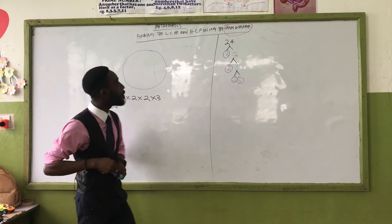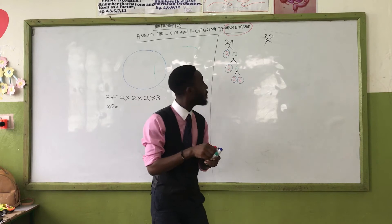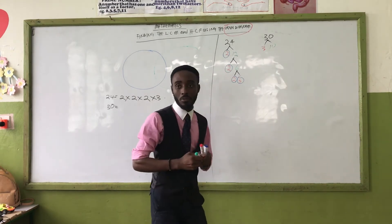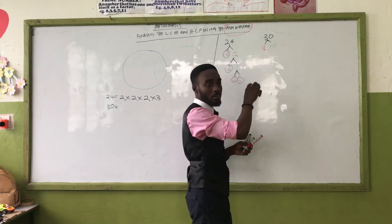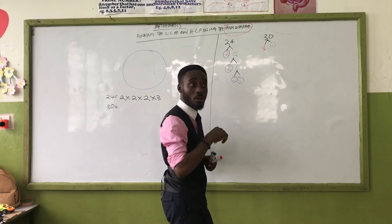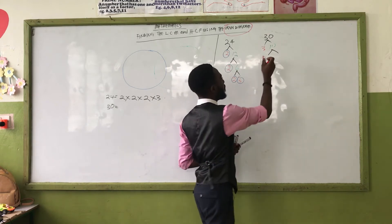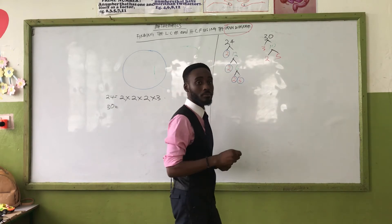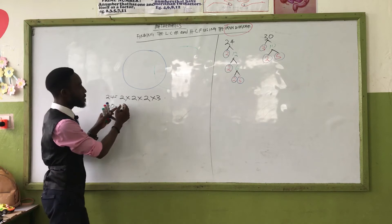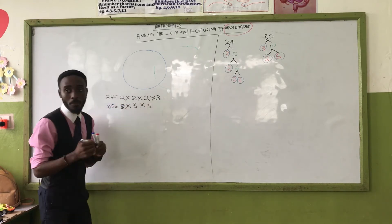Now let's do the same for 30. Give me the first pair — 3 times 10. Which one do we break down? 10. We call these number bonds — like friends. 10 is 2 times 5. So which ones are prime? Three, two, five. So the prime factorization of 30 is 2 times 3 times 5.